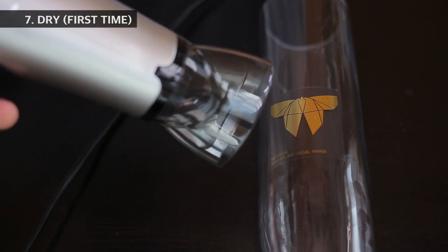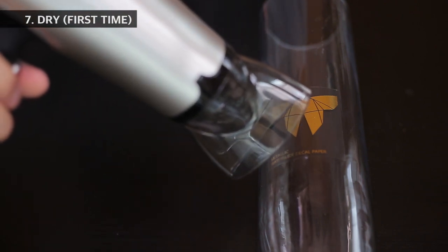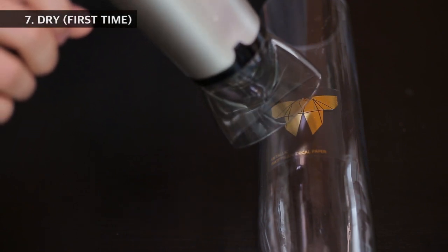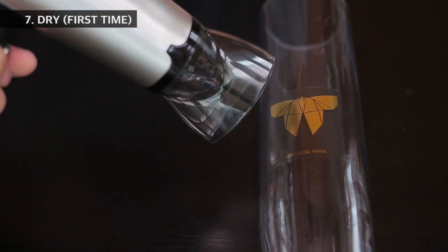Blow dry with a hairdryer for three to five minutes or if possible, bake in the oven at 100 degrees for 10 to 20 minutes or you can choose to let it dry naturally for three to four hours.